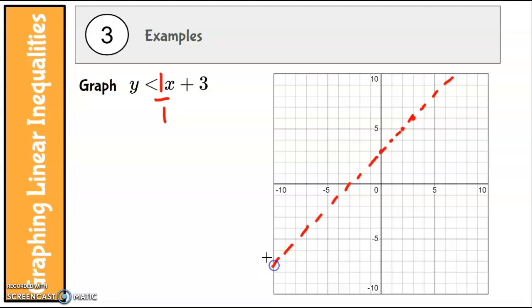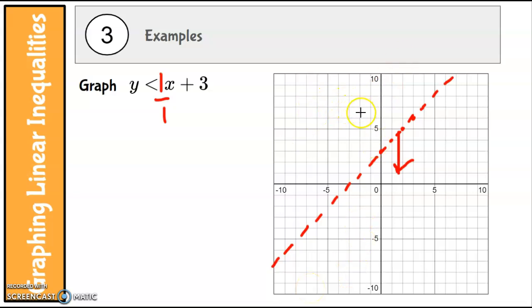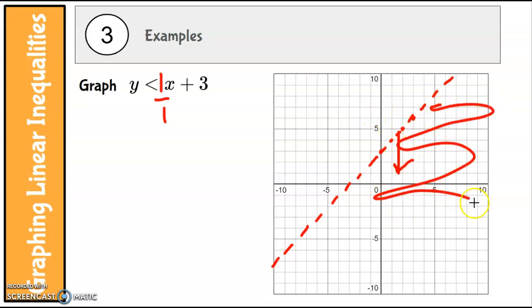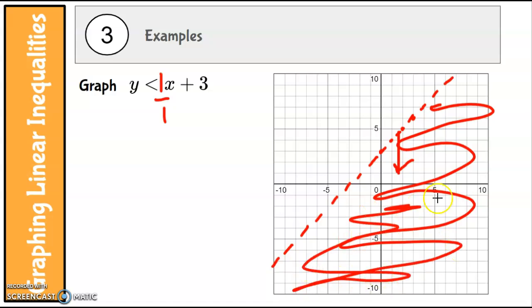It's less than, so we're going to shade down. One easy way to decide which way is under: start at the line and draw an arrow straight down — that is under the line. It's not so hard here, but as the line gets steeper it's sometimes hard for students to tell which way is under. Just start at the line and draw an arrow straight down — that is underneath — and this would be the shaded area. You're done.